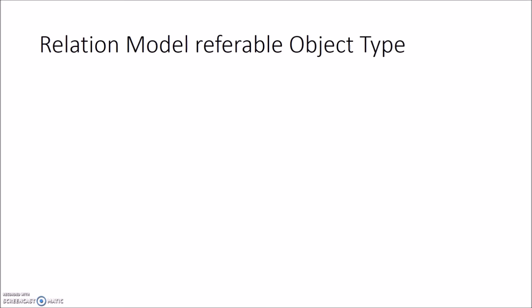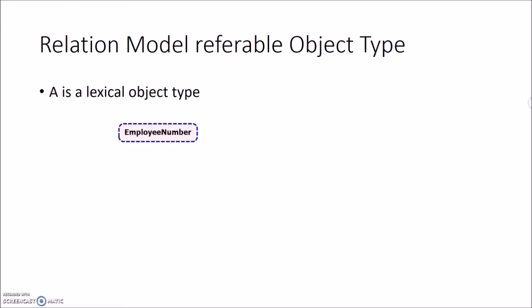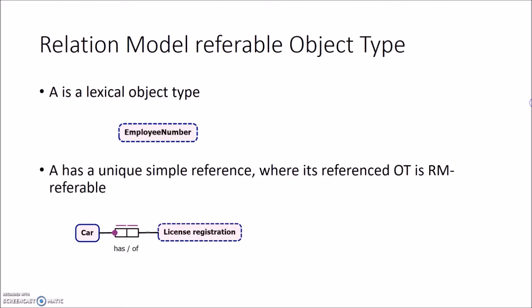There are four aspects to check whether or not an object type is relational model referable. The first is when the object type is a lexical object type — we have seen that these will be mapped to attributes, so they are automatically relational model referable. The second is when the object type has a unique simple reference and the referenced object type is also relational model referable. When there is a fact type where both roles are identifying and one role is mandatory, this is a unique simple reference.